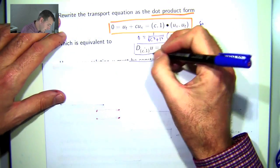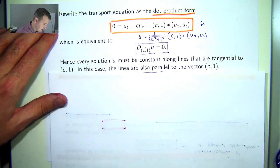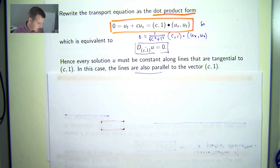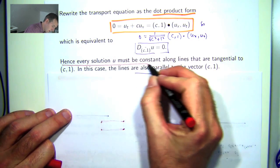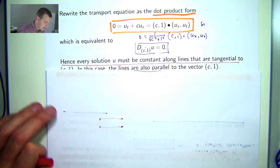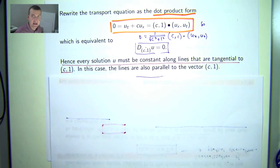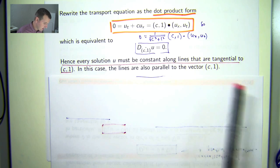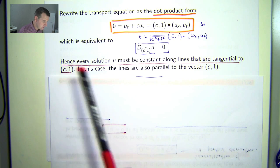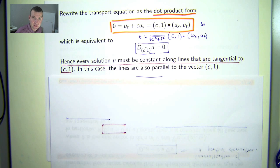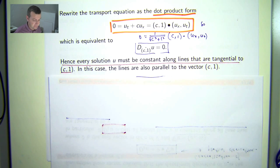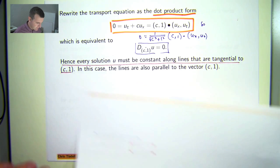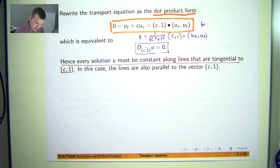What does this mean? It means that every solution to our transport equation u must be constant along the lines that are tangential to this vector c comma one. Now, because we're going to have straight lines here, because this is the constant vector. So the lines that are tangential to them are going to be straight lines. In this case, the lines in question are also parallel to the vector c comma one. So let me draw a little picture and show you what I mean.